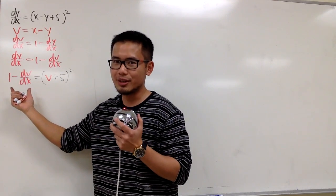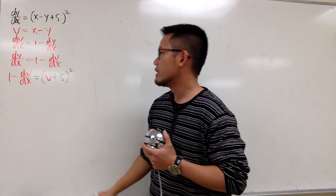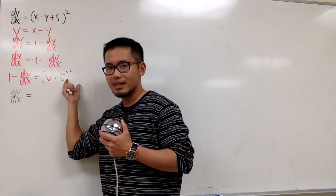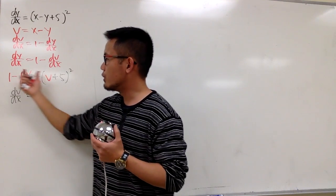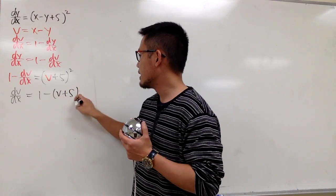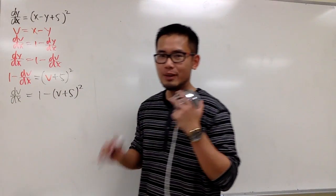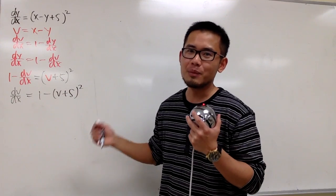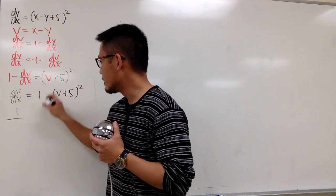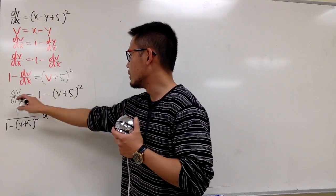I'm going to rearrange things. I want to keep dv/dx positive, so moving terms around: 1 - (v + 5)² = dv/dx. This is separable, so dividing both sides gives 1 over [1 - (v + 5)²] dv = dx.